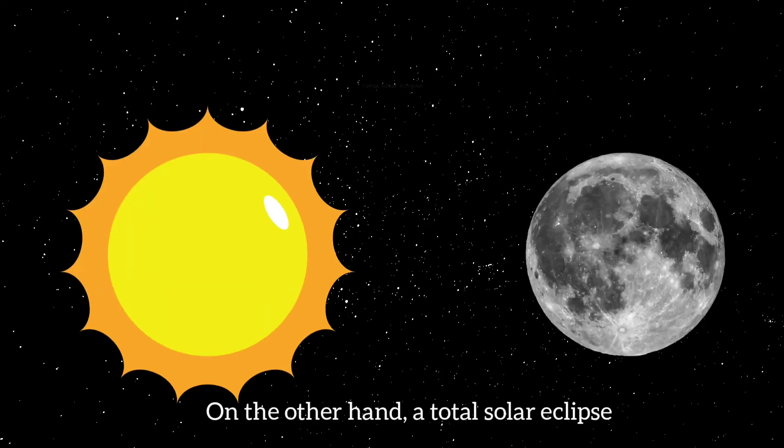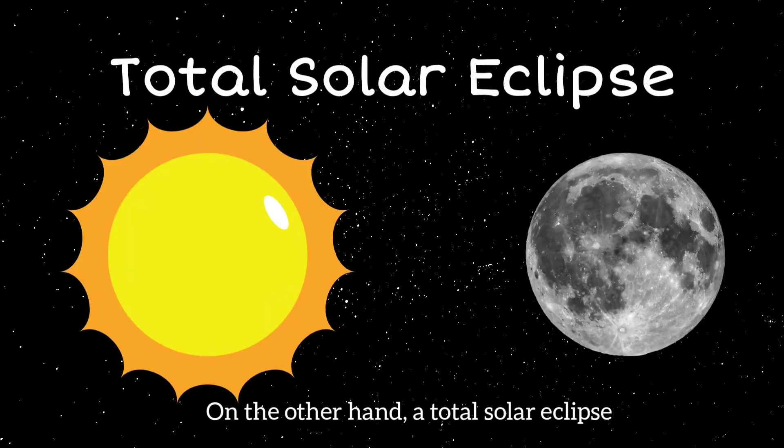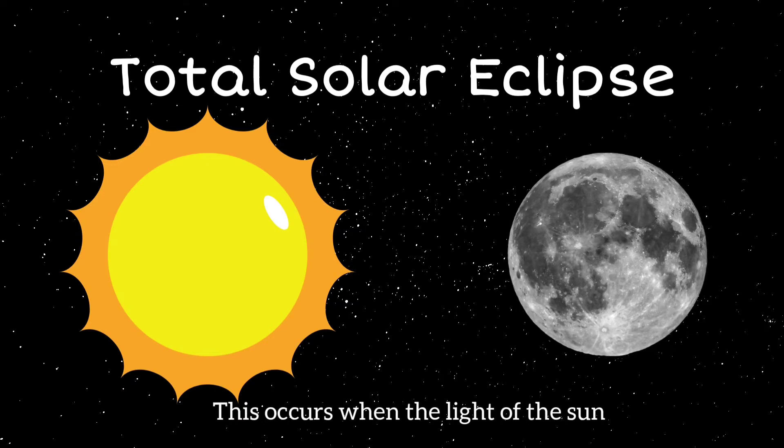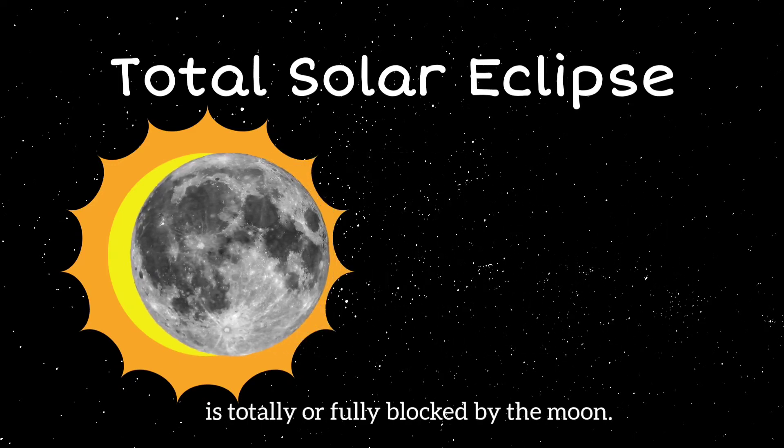On the other hand, a total solar eclipse happens about every year and a half somewhere on Earth. This occurs when the light of the sun is totally or fully blocked by the moon.